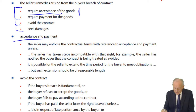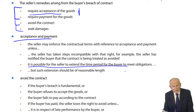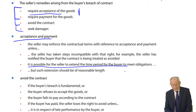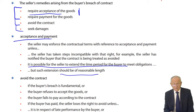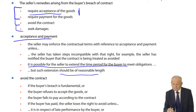It's possible for the seller to extend the time period for the buyer to meet their obligations. For example, the buyer may need another couple of weeks to collect money from receivables. The seller may grant that extension, but it should be of reasonable length. The buyer should not be asking for a year or two years. The seller should only grant an extension that is reasonable in the circumstances.